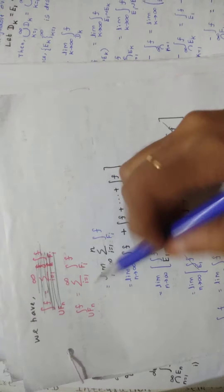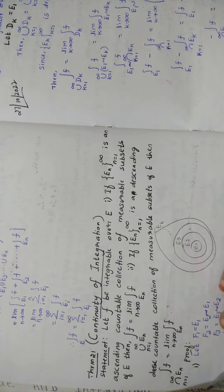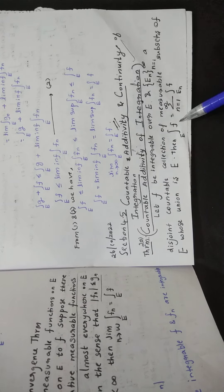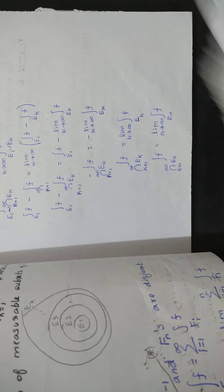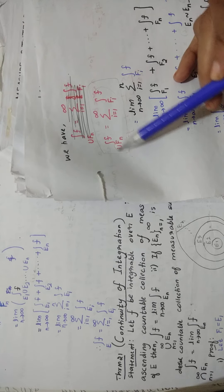We have a previous result — the Countable Additivity of Integration, Section 4.5. In that theorem, the integral of f over E equals the sum. Using that, you write: integral of f over the union of Fn equals summation i equal to 1 to infinity of the integral of f over Fi. Since union Fn equals union En, you can write the union En as union Fn, so the integral over E equals this summation.